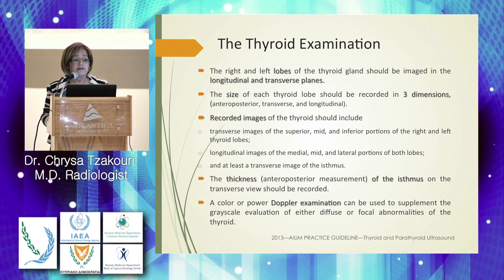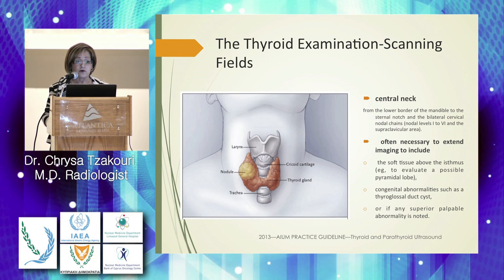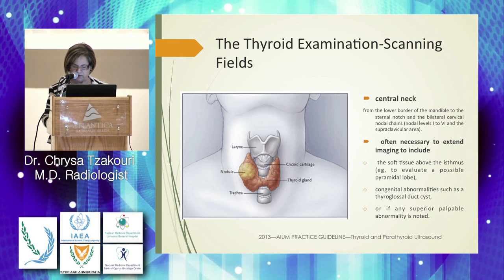The examination scanning field covers the central neck from the lower border of the mandible to the sternal notch, and the bilateral cervical nodal chains. It is often necessary to extend imaging to include soft tissue above for congenital abnormalities, or if any superior paraspinal abnormalities are noted.